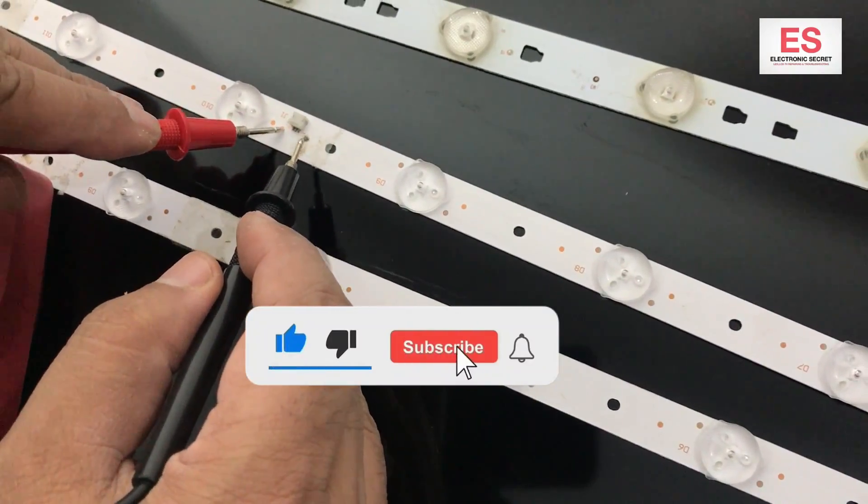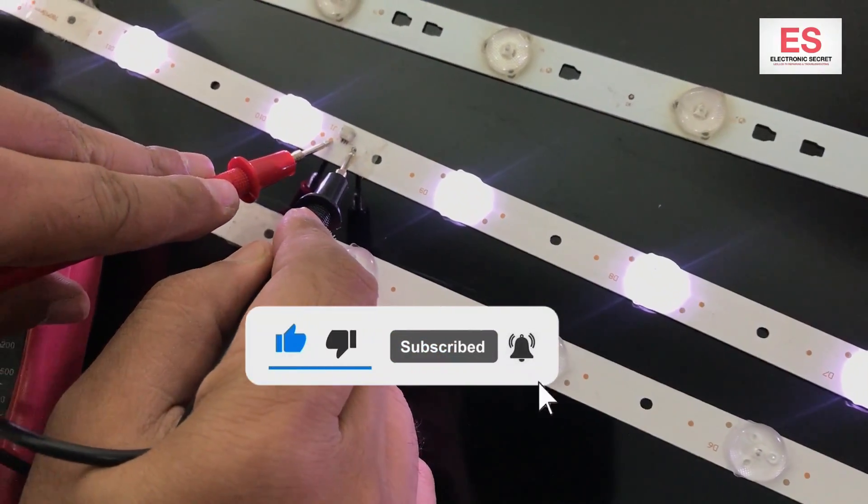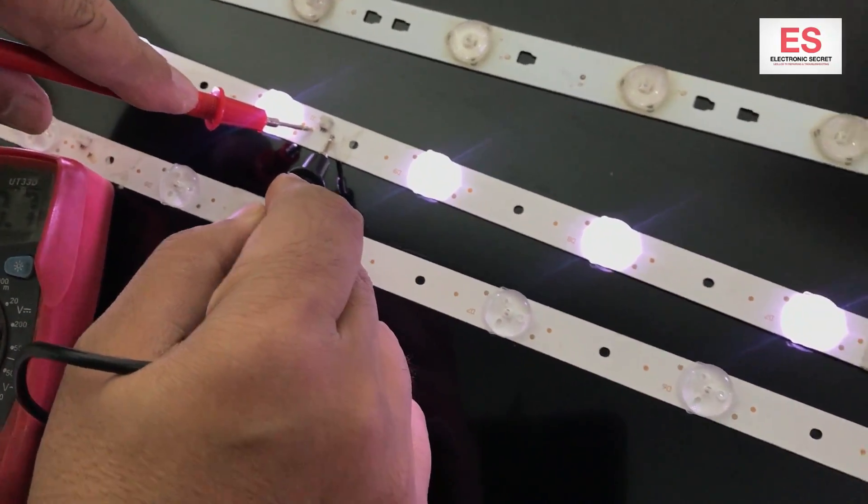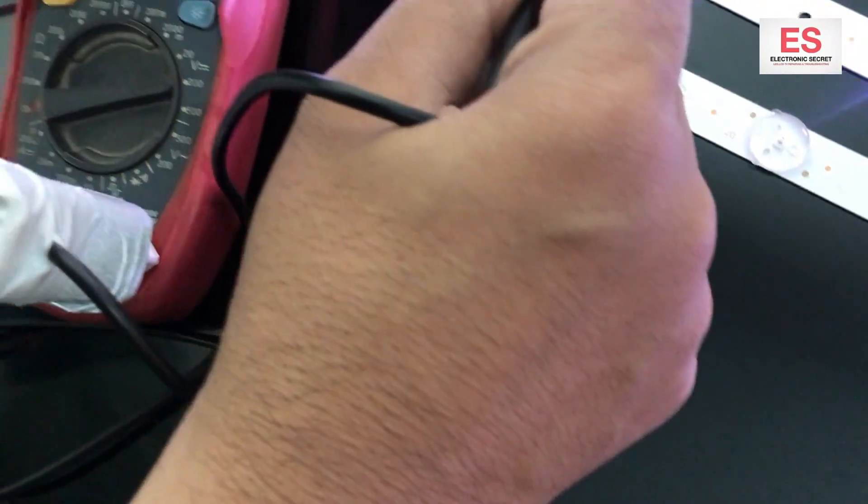This is the good one and okay backlight strip. All its lights are glowing. You can see that the voltage is showing 30 volts on the meter.